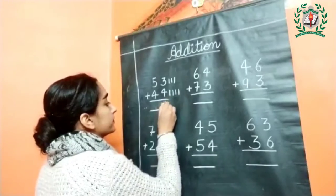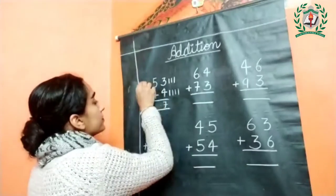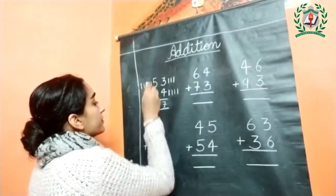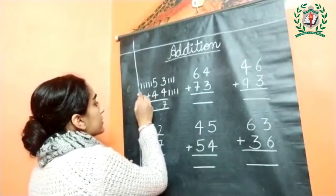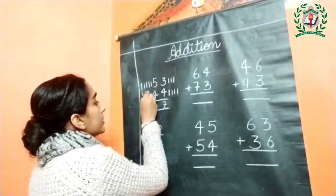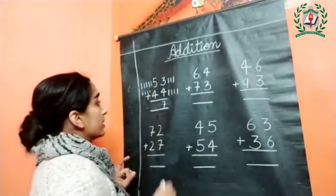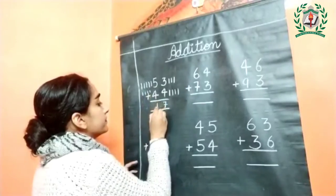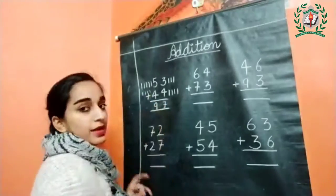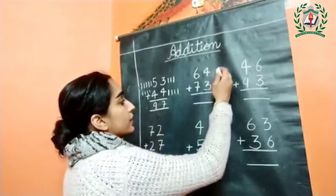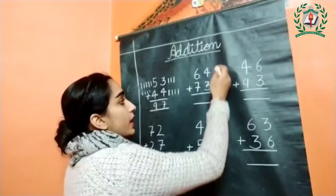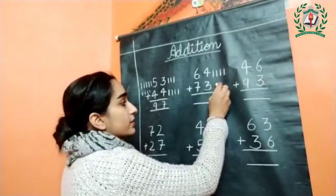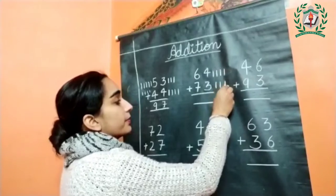Next, this is five — draw five lines: one, two, three, four, and five. This is four — draw four lines: one, two, three, and four. Now add them together: one, two, three, four, five, six, seven, eight, and nine. The total number is 97.